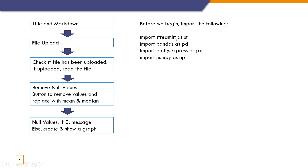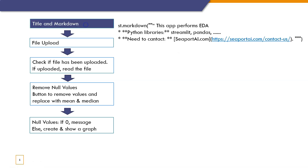The importing of necessary libraries should be completed before we begin the actual coding. The steps involved are: we start with title and markdown — giving a name for this app and providing additional details. Using st.markdown, we say this app performs EDA, mention the libraries used, and provide contact details if assistance is needed. This is what we do in the title and markdown section. Then we go to uploading of the file.